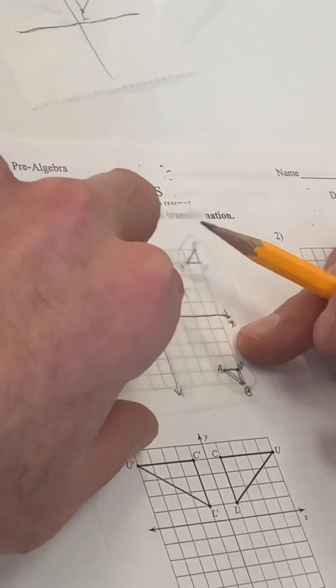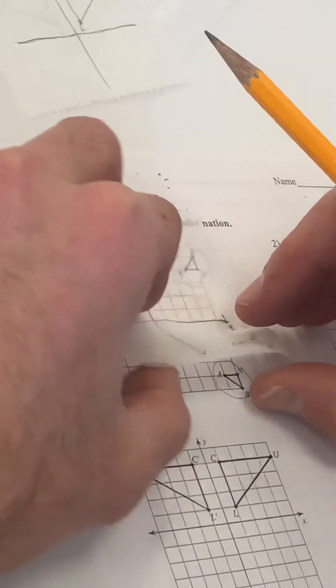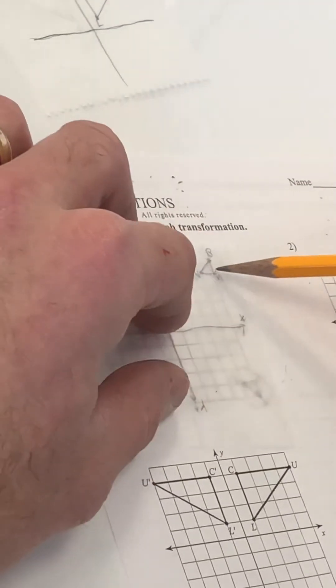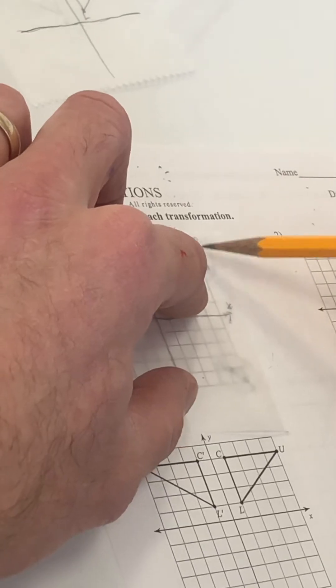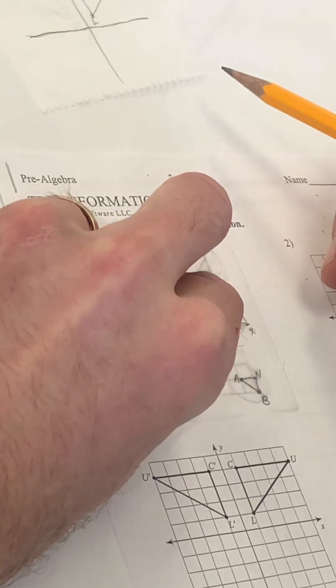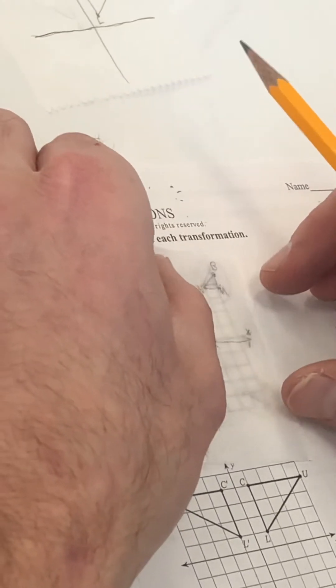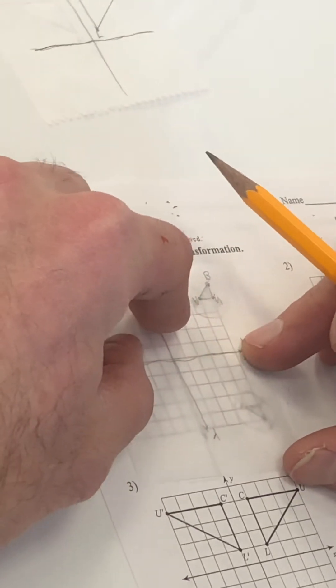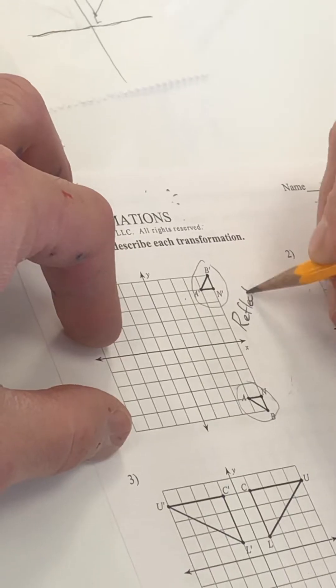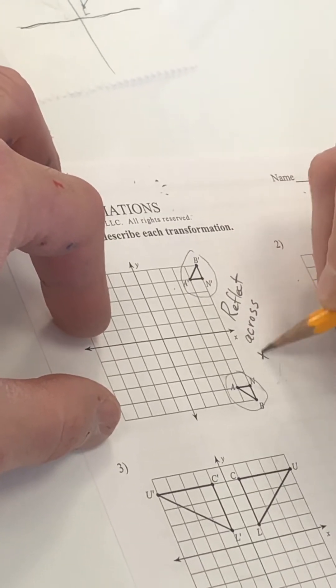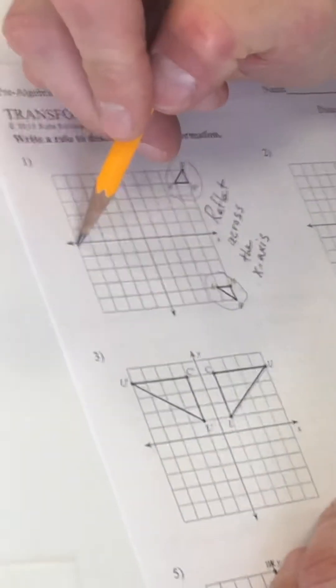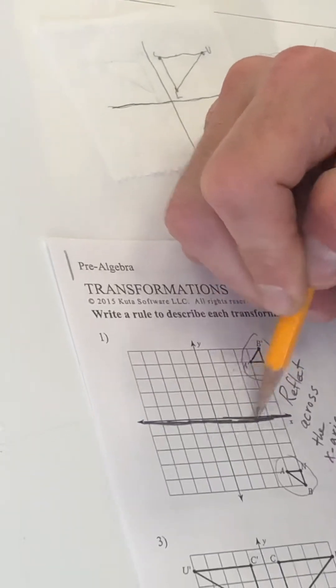But what it is, is a reflect. So watch, I'm going to flip my paper over. Can you guys see that? See how it matches right on top? So again, I flipped my paper. So it was here. I reflected it to here. So the answer to this first one is reflect across the x-axis. And that was this line right here. This is my line of reflection, the x-axis.